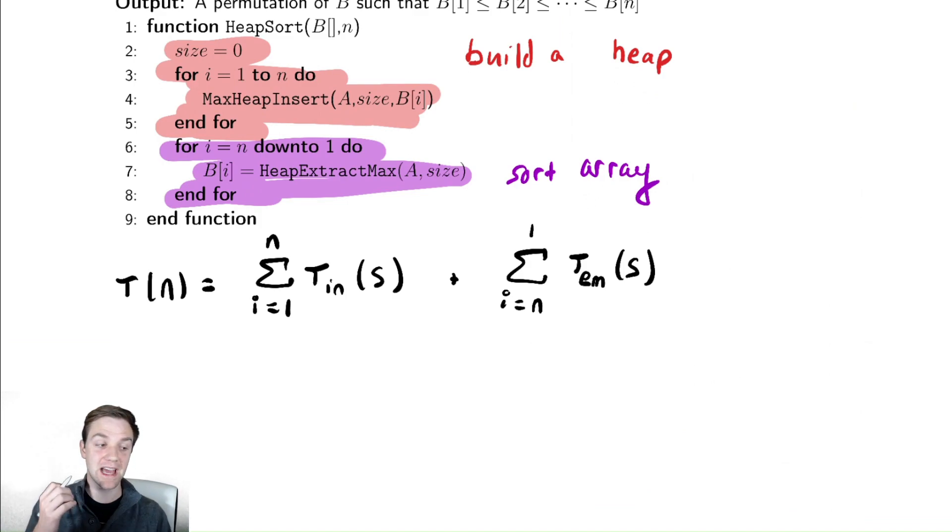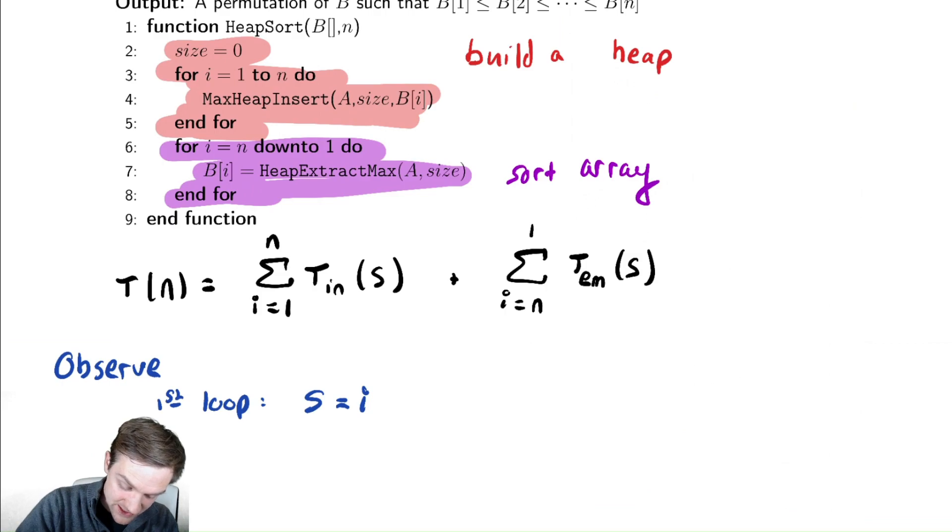Just like we saw when we were looking at hashing, thinking about this in terms of the size of the data structure would be very helpful. There are two different ways we can approach this. One is we could observe that during the first loop, the size is equal to i. And during the second loop,